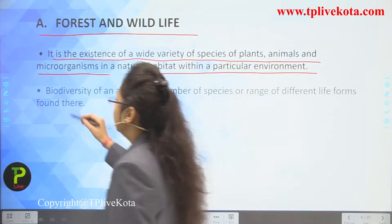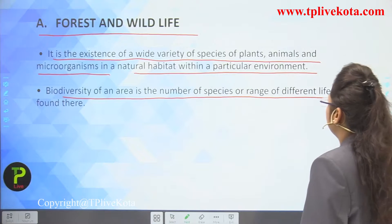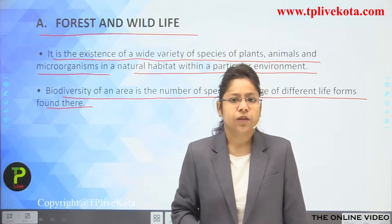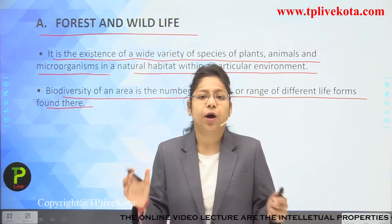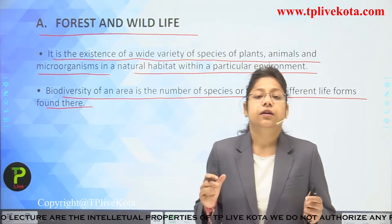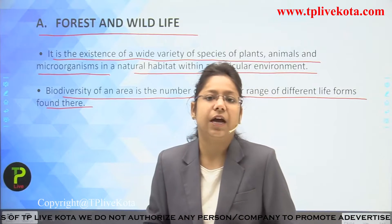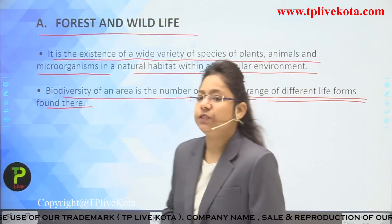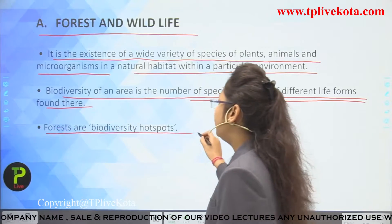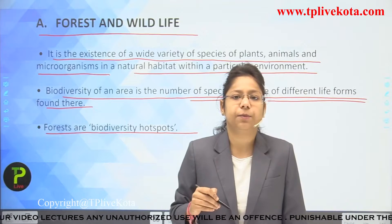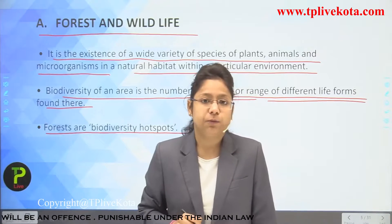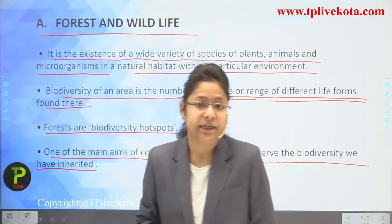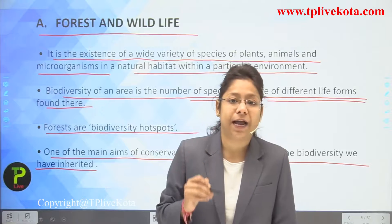Biodiversity of an area is the number of species or range of different life forms found there. Diversity means a large number of species present in a single area — that is counted as biodiversity. Forests are biodiversity hot spots. One of the main aims of conservation is to try and preserve the biodiversity we have inherited, because it is a gift of nature.